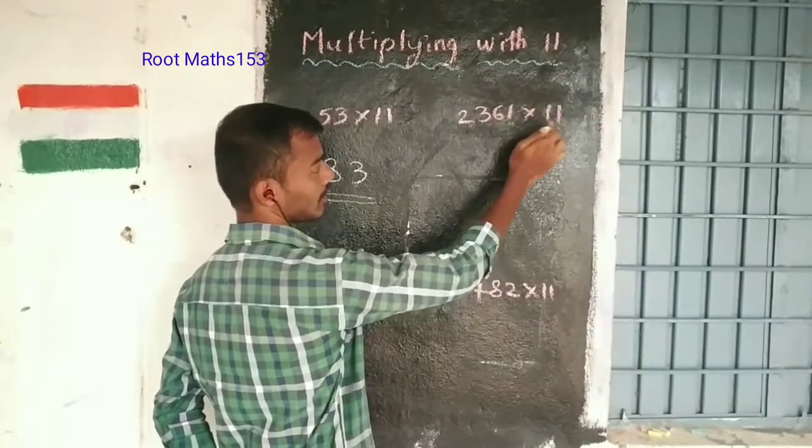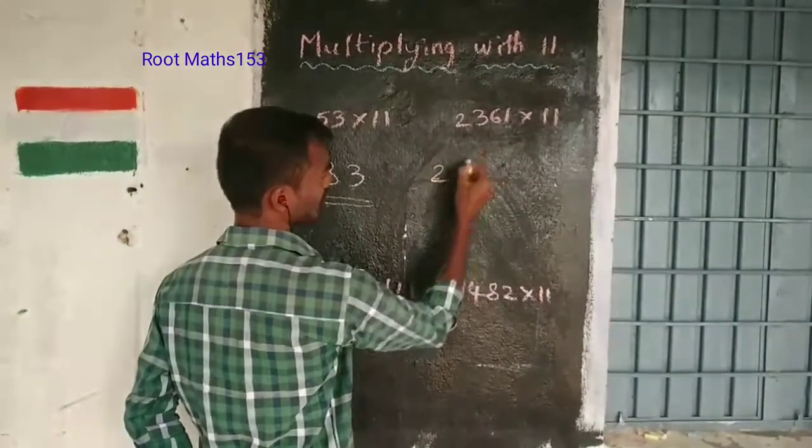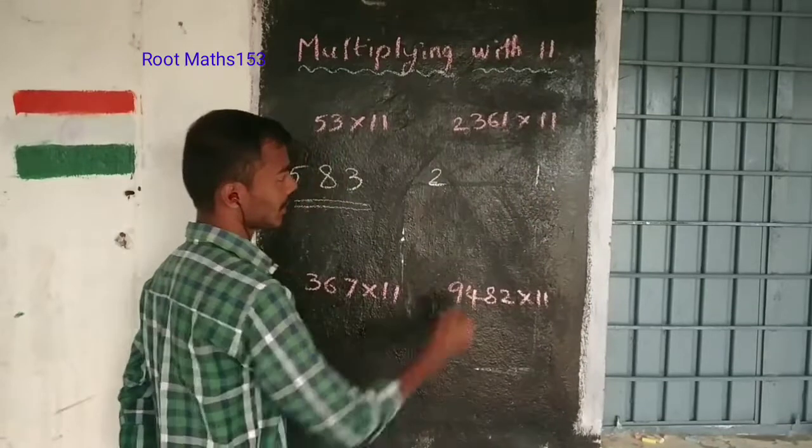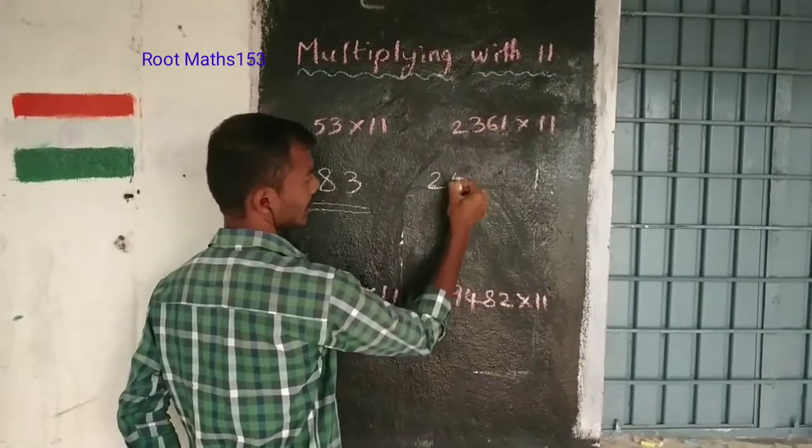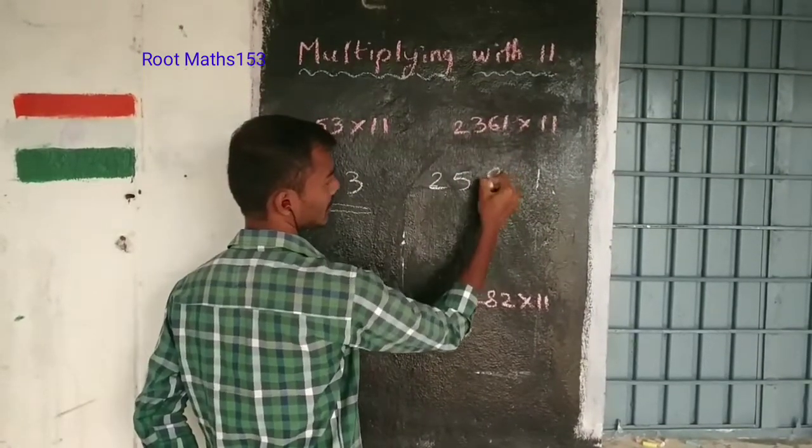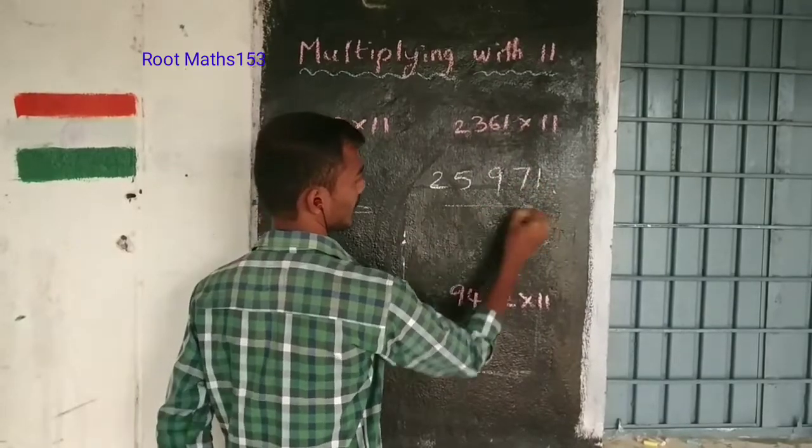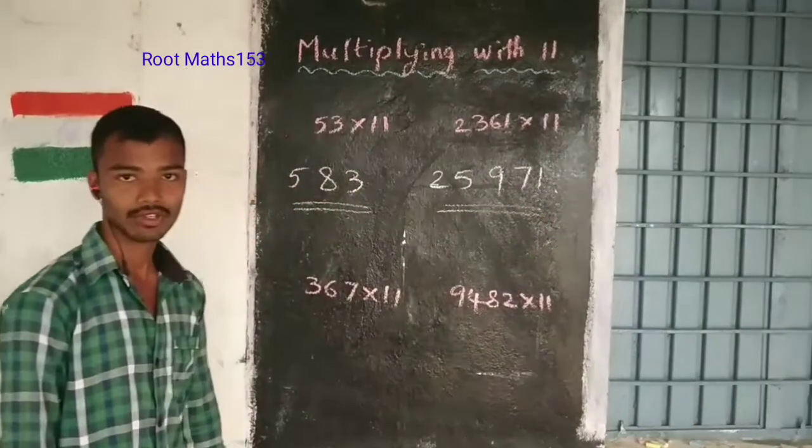2361 times 11. Write first digit 2 and last digit 1. Then add adjacent digits: 2 plus 3, 3 plus 6, 6 plus 1. That gives us our answer: 25971. Are we clear?